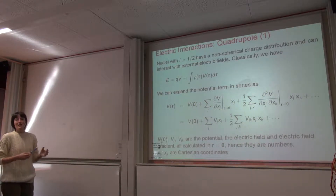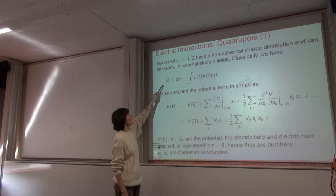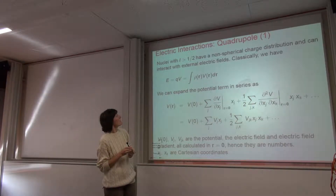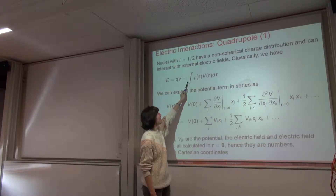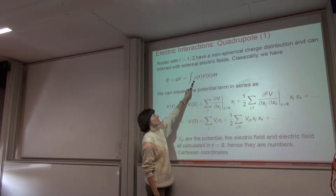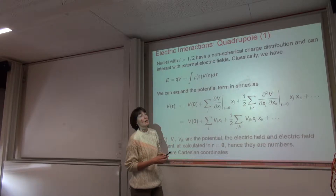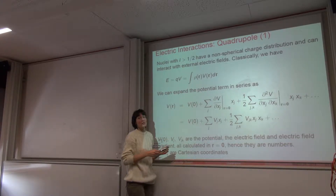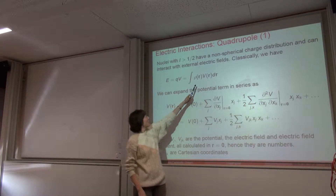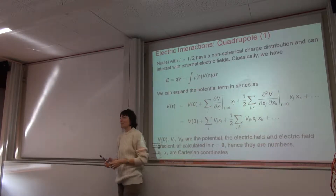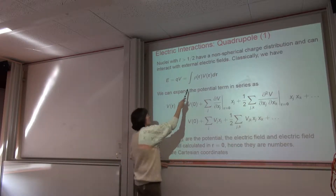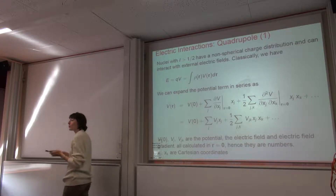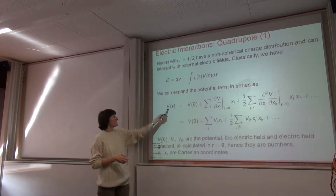Now let's look at the classical origin of the quadrupolar interaction. The energy of interaction between a charge and a voltage is given by the product of the charge and the potential V. This can be expanded so that instead of the charge we put in the charge density rho, and then integrate over position. This is more explicit because the electric potential can be space dependent.